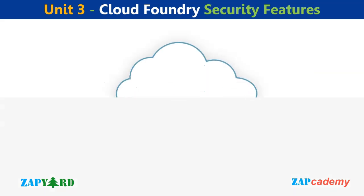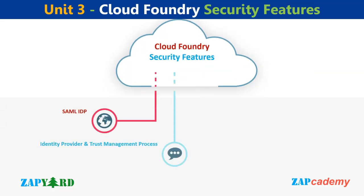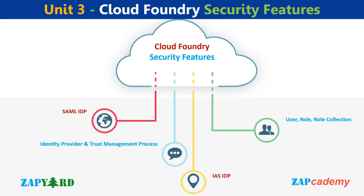Unit 3 is geared towards the security features of Cloud Foundry. The instructor will provide comprehensive coverage of user, role, and role collection concepts. The identity provider and trust management process will be thoroughly explained, and the SAP Identity Authentication Service will be discussed. You may be familiar with SAML IDP — Security Assertion Markup Language Identity Provider — but we will provide more in-depth insights so you will have a better grasp of Cloud Foundry security features after this session.